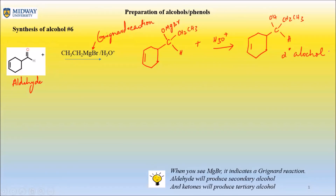So to summarize: if you start with an aldehyde and do a Grignard reaction, you will get a secondary alcohol. If you start with a ketone and do a Grignard reaction, you end up with a tertiary alcohol. I've put the tip there so you can remember it. Stay tuned for the last video on the synthesis of alcohols.